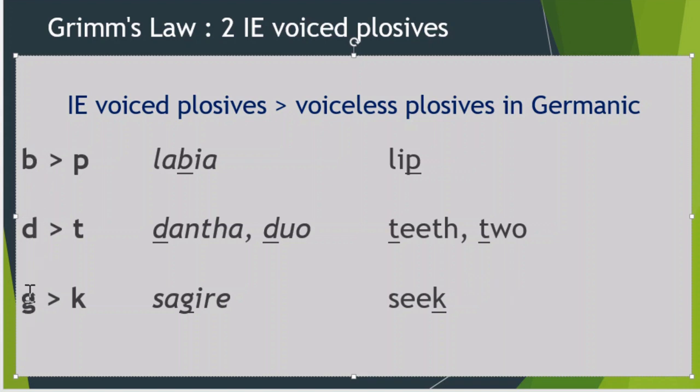An example of 'b' becoming 'p' is seen in Latin 'labium' meaning lip — it remains in English as 'lip'. For 'd' becoming 't', we have Sanskrit 'danta' and Latin 'duo' becoming 'teeth' and 'two'. So 'd' becomes 't' in English, which represents the Germanic family. For 'g' becoming 'k', you can see it in Latin 'sagari' — 'g' becoming 'k'. So 'b', 'd', and 'g', which are voiced plosives, lose their voicing and become 'p', 't', and 'k' in Germanic languages.